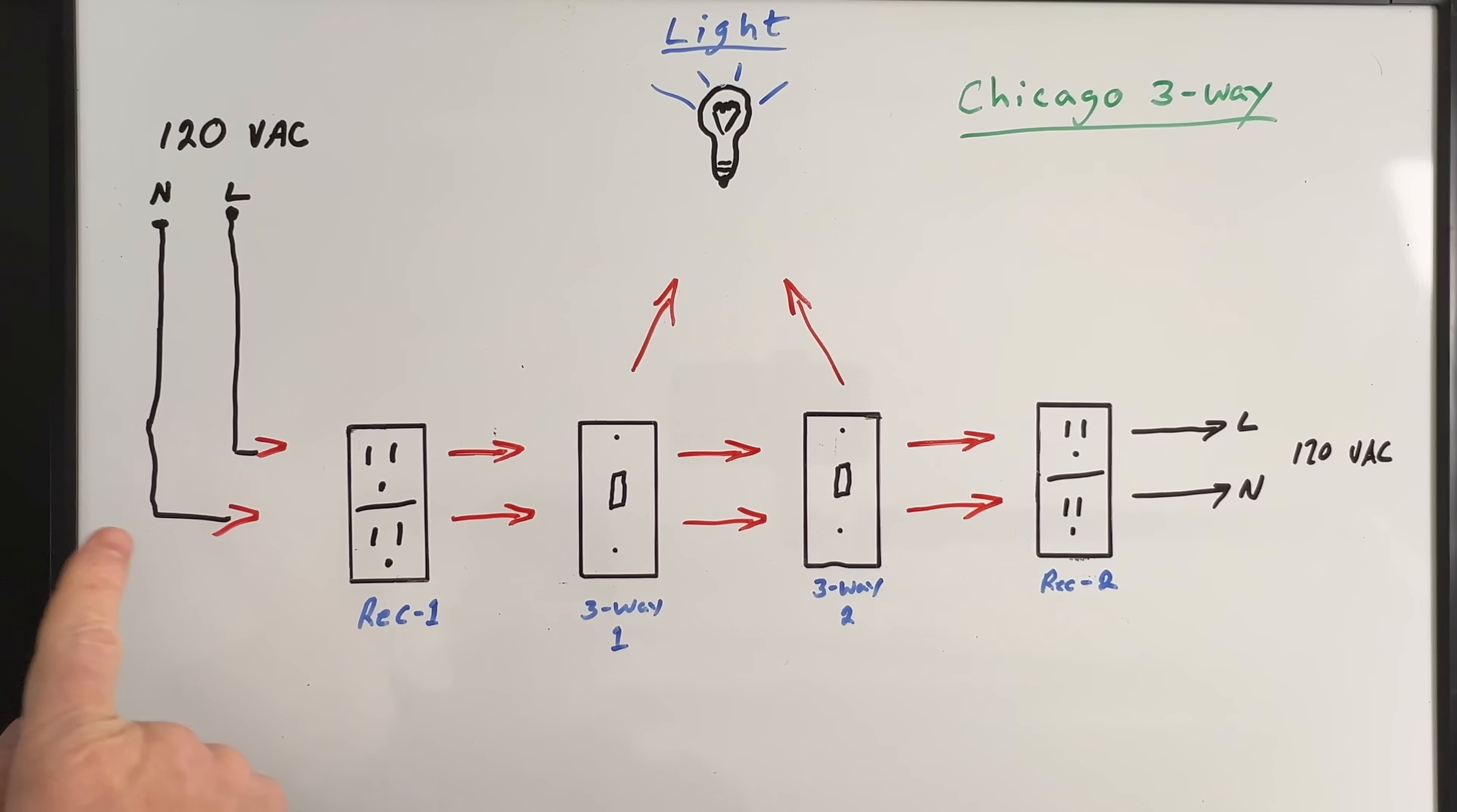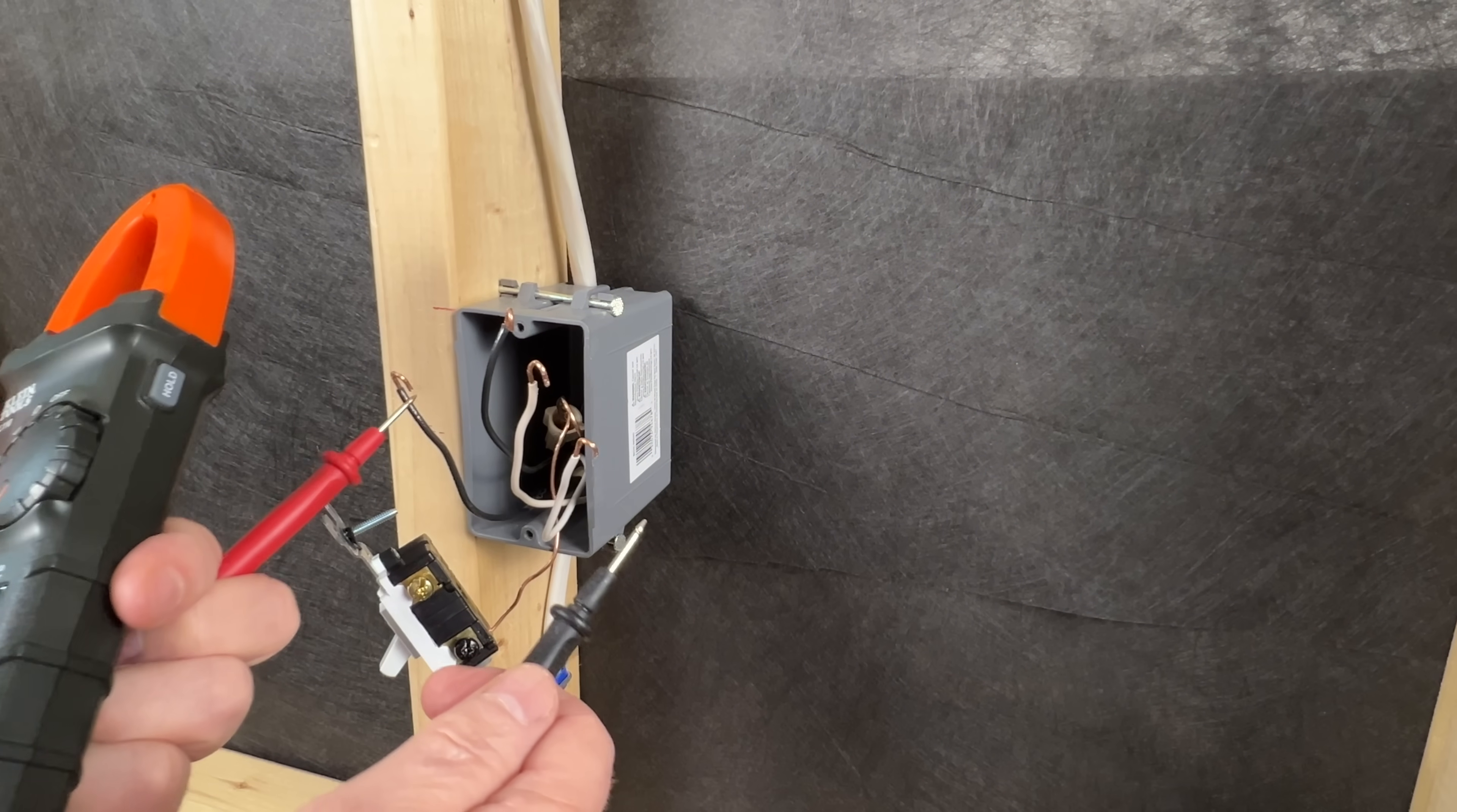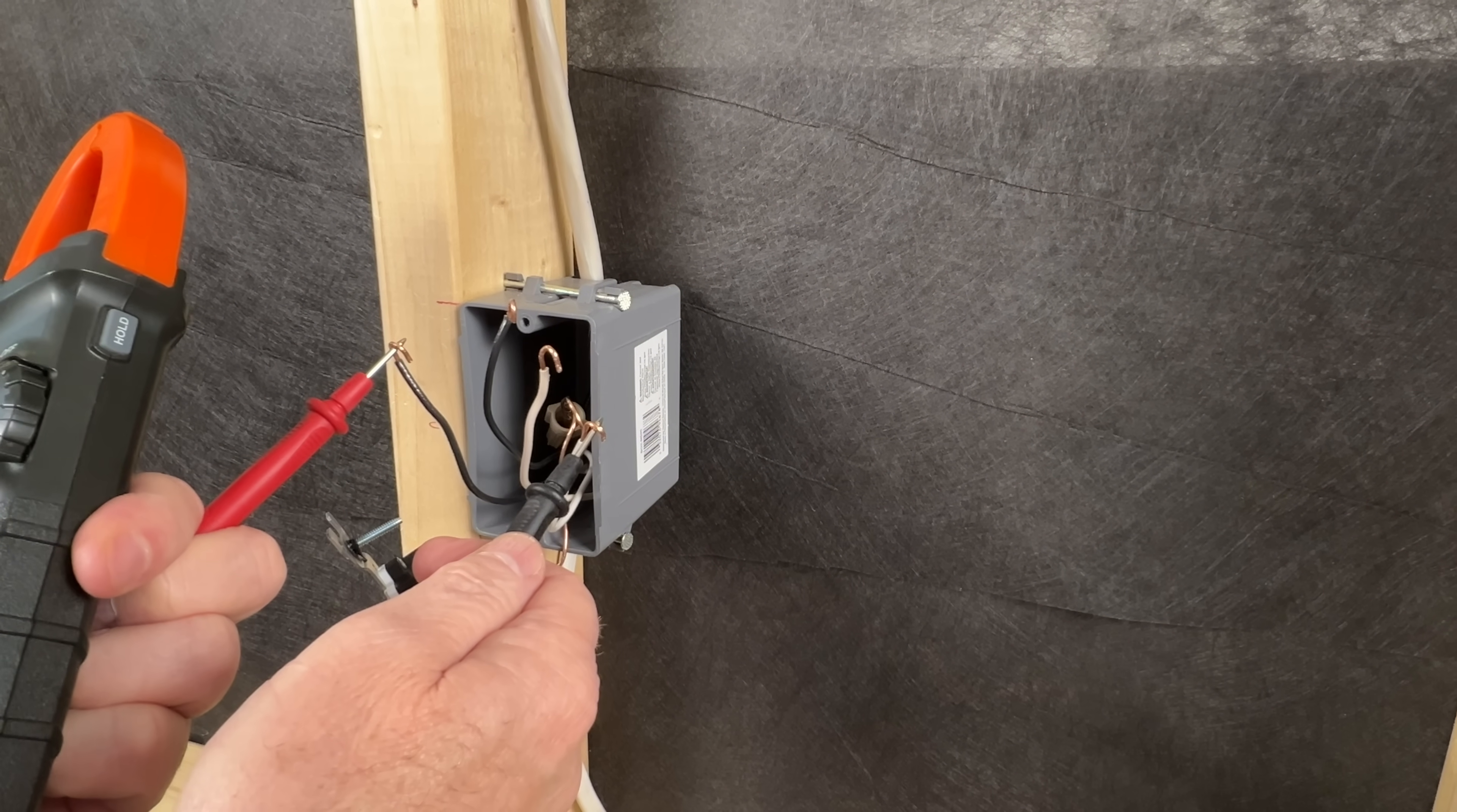The method was designed to carry unswitched power through both of your three-ways and continue on to other lights and receptacles on the same circuit. And this was all done using just two wires between each box. They can be very confusing to wire when rewiring switches in older homes. And since they use just two wires, they're not easily converted to a modern method.